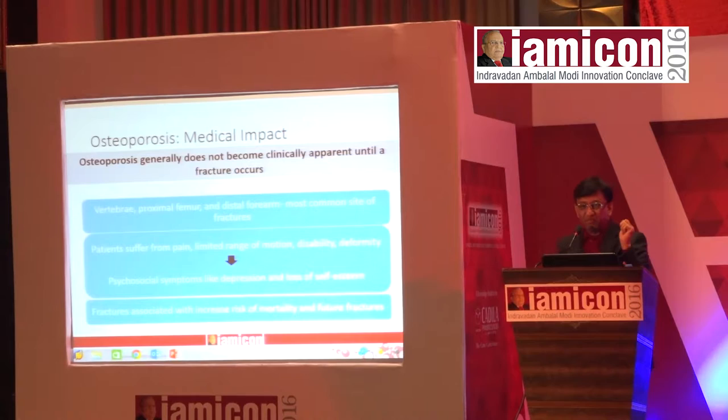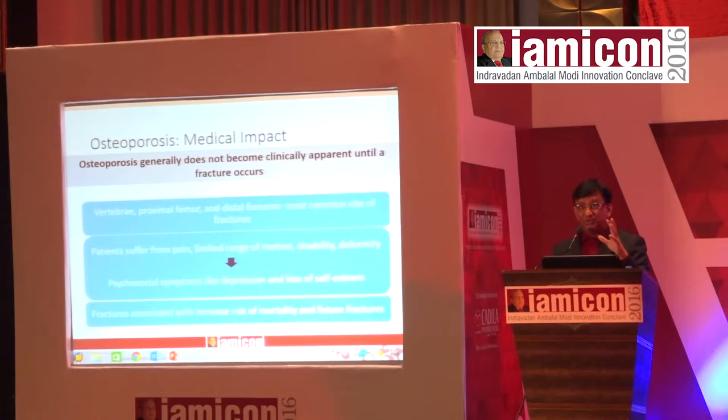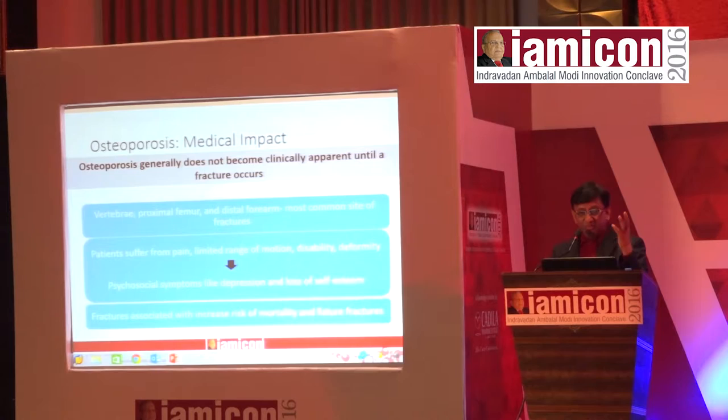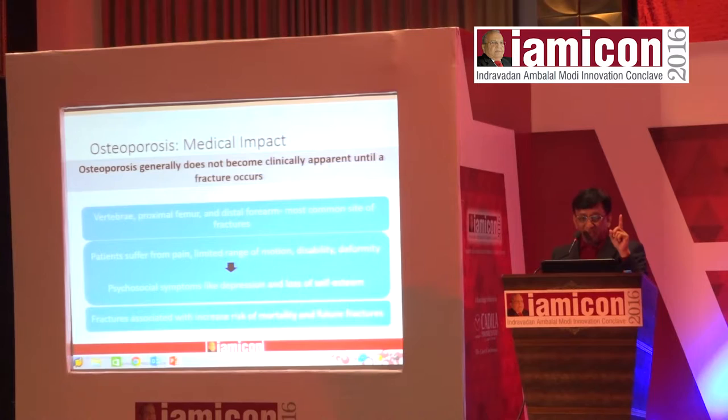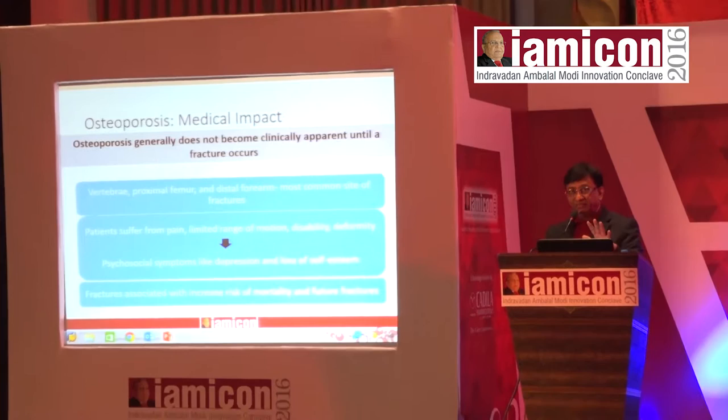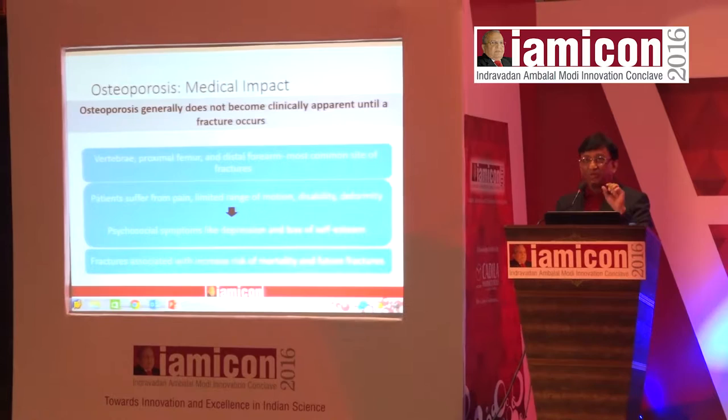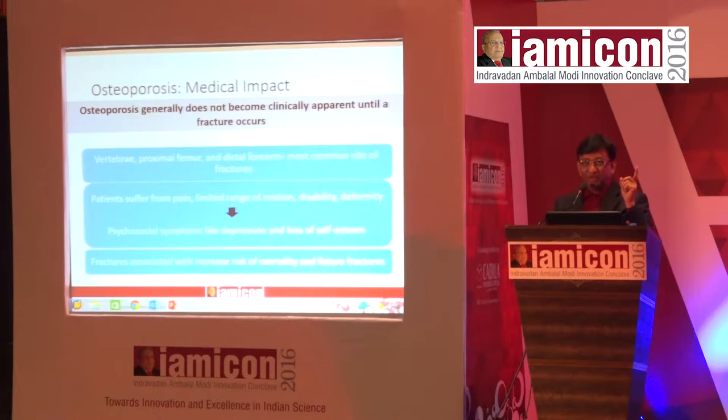Osteoporosis generally does not become clinically apparent until a fracture has already happened, meaning prevention opportunity has passed. Fractures occur at the vertebra, proximal femur, and distal radius. Patients suffer from pain and limited range of motion. For example, a surgeon standing for four hours who has pain below the knee or backache — think of osteoporosis. Or a person who does a little heavy work and the whole body starts paining — think of osteoporosis. These are the first symptoms.